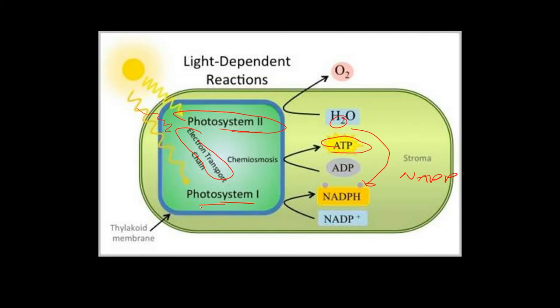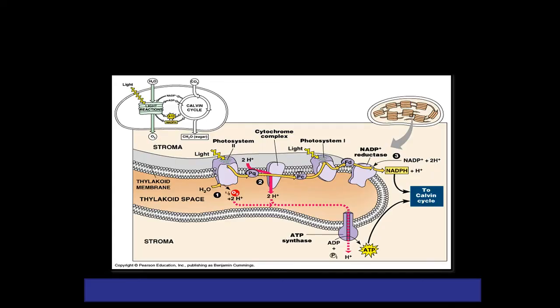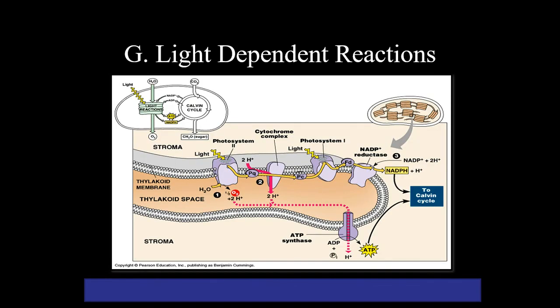Electrons from Photosystem 1 reduce the coenzyme NADP+ to NADPH. Photosystem 2 regains electrons by splitting water and releasing oxygen. The byproduct of the light-dependent reaction is oxygen gas, which is considered a waste material in the reaction.